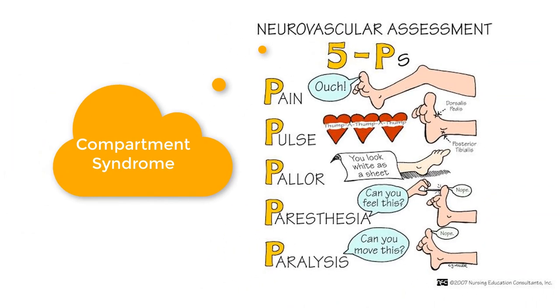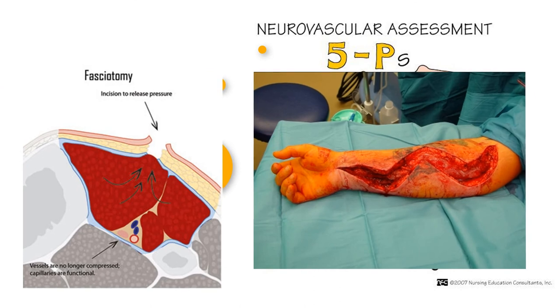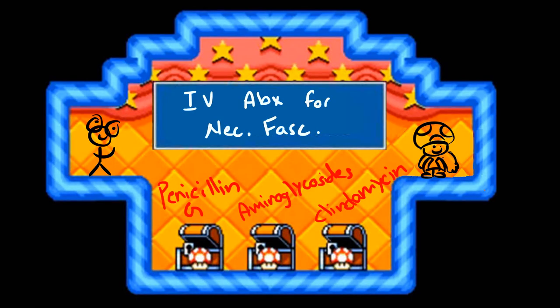These patients will require surgical debridement - cutting the fascial planes to decrease the pressure - which resolves the compartment syndrome, along with IV antibiotics. We use a combination of penicillin G, aminoglycosides, and clindamycin to cover all possible organisms.